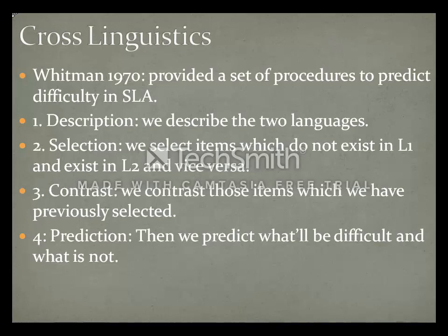We then move to the third procedure: contrast — we contrast the items previously selected. The fourth and final procedure is prediction. Again, prediction is not guaranteed; we simply predict what will be difficult and what will not.